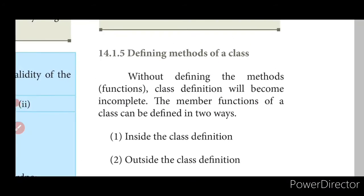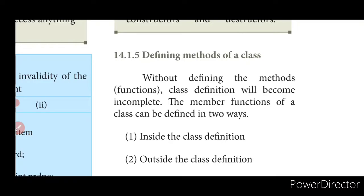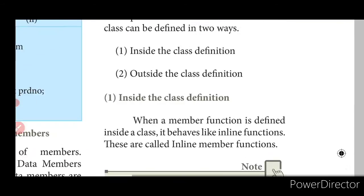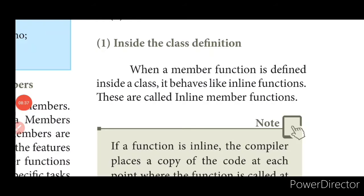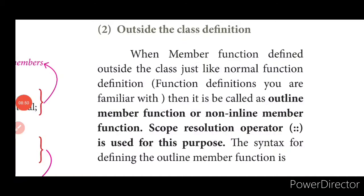Defining methods inside a class is essential — without defining methods, the class definition will be incomplete. Member functions can be defined in two ways: inside the class definition, or outside the class definition. When a member function is defined inside a class, it behaves like an inline function — called an inline member function. When defined outside the class, it behaves like a normal function — called an outline or non-inline member function. For outside definitions, we use the scope resolution operator to access the class functions.